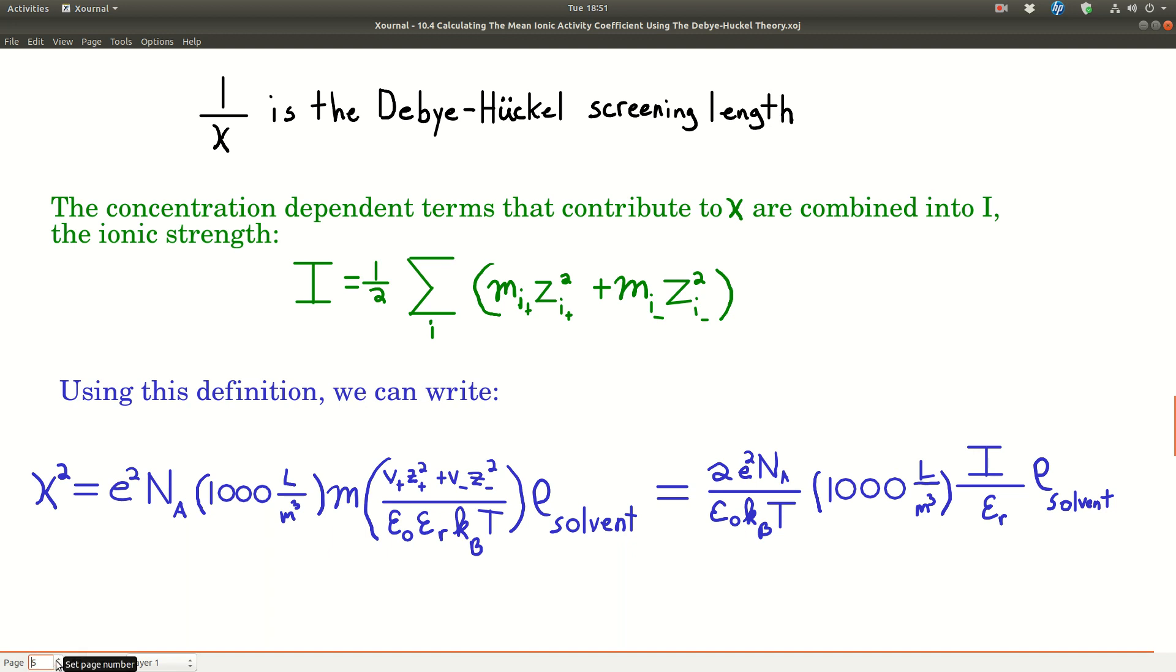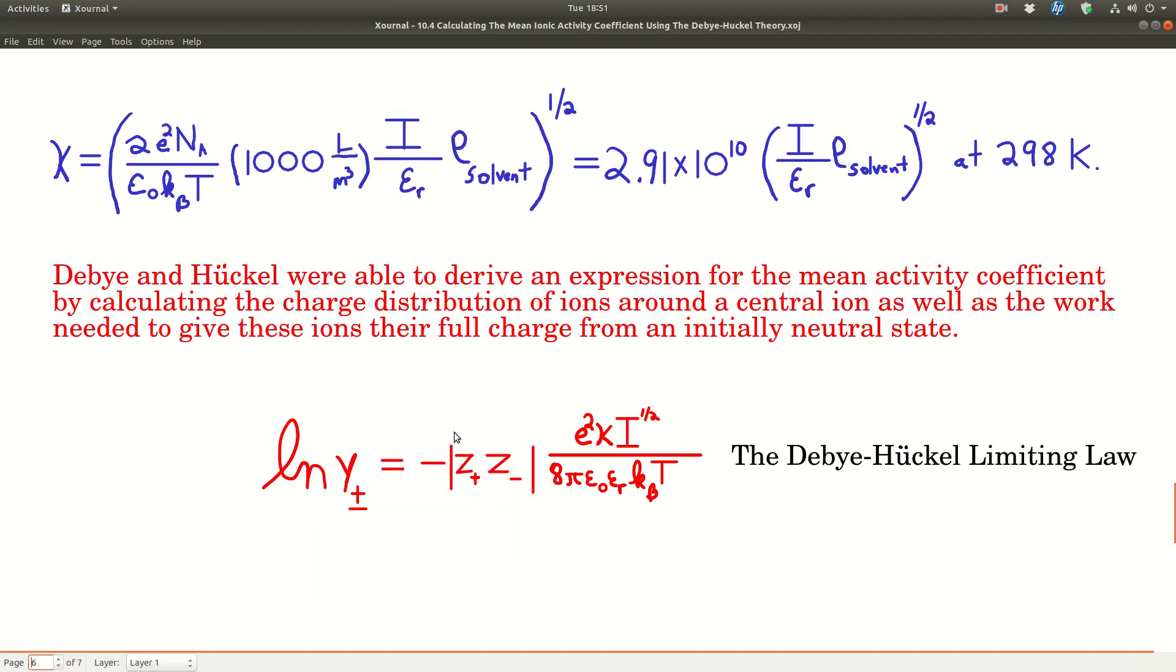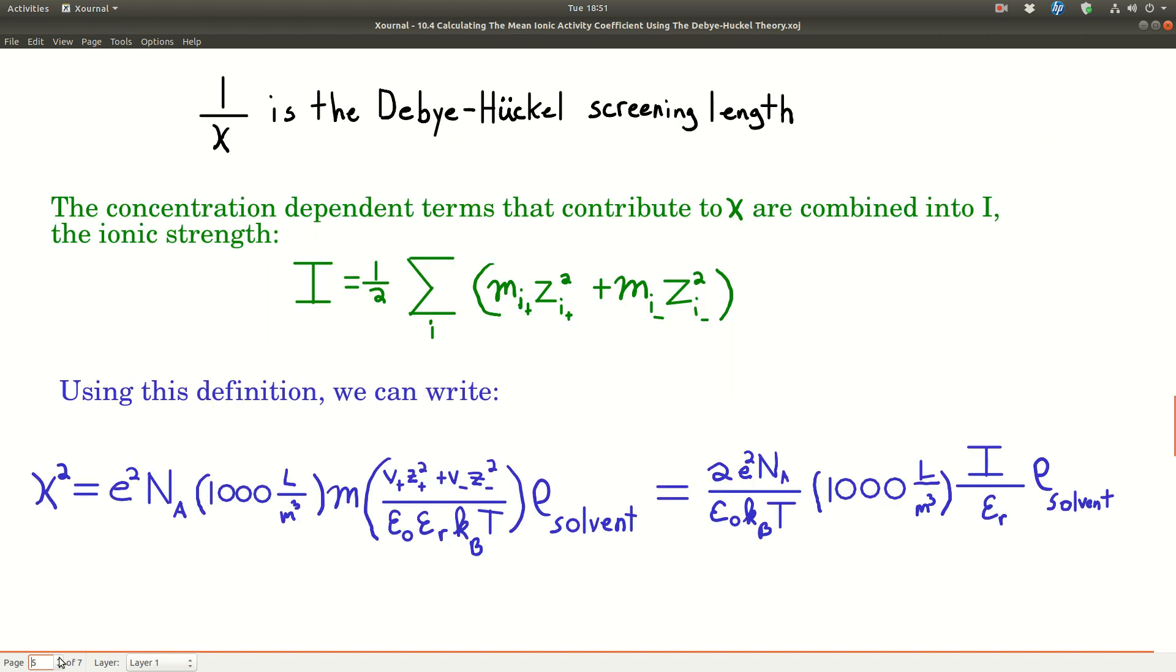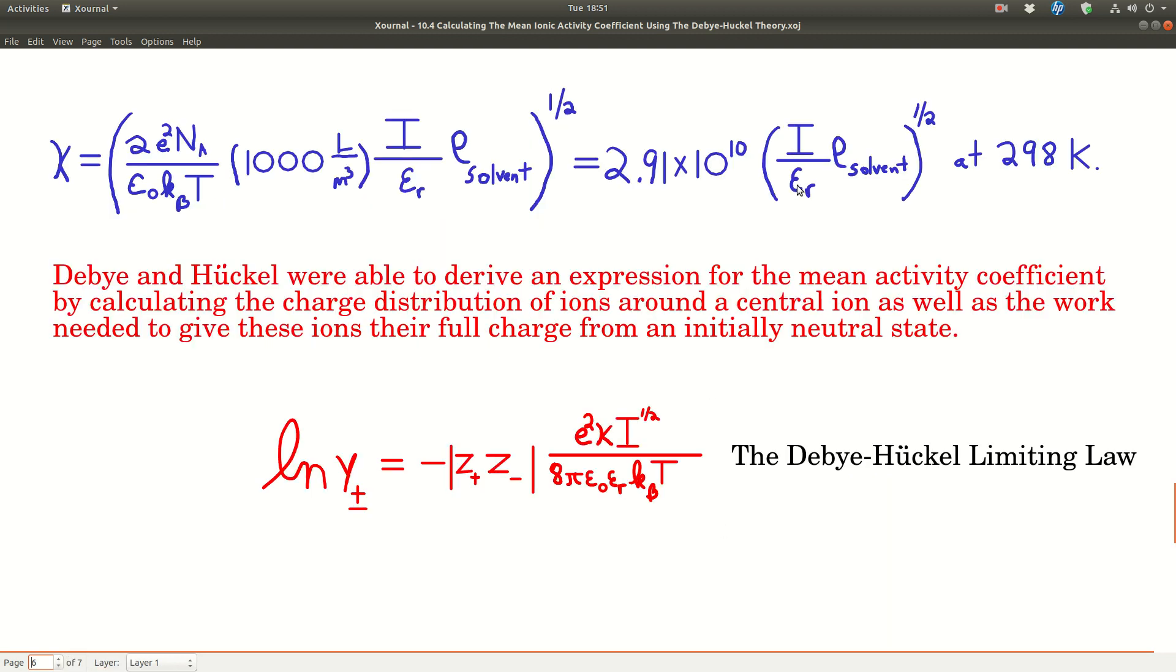All this stuff is constants. At 298 Kelvin, plug in the values for all this, and we can write kappa as 2.91 times 10 to the 10th. All that's left is the ionic strength, the dielectric constant, and the density of the solvent.